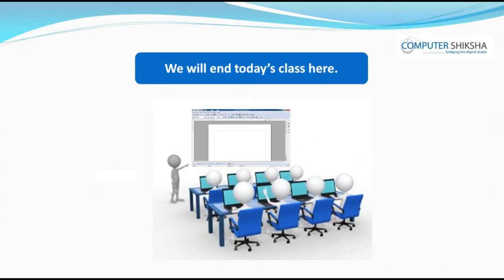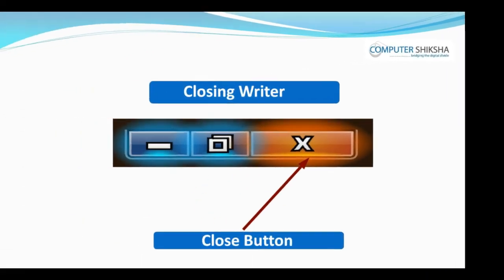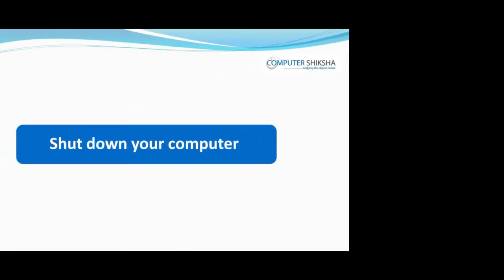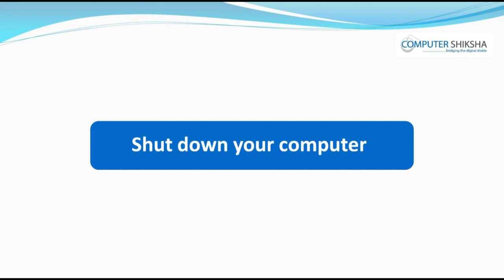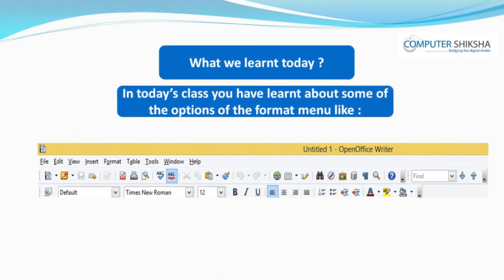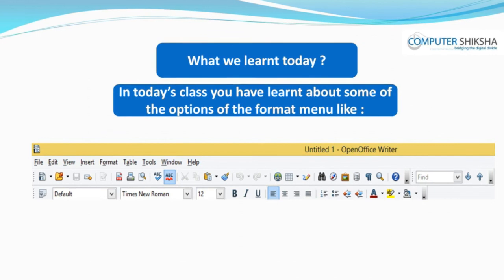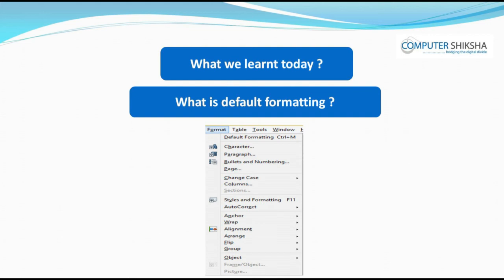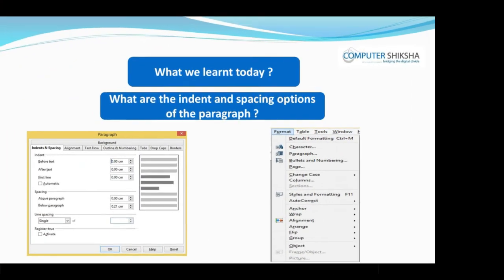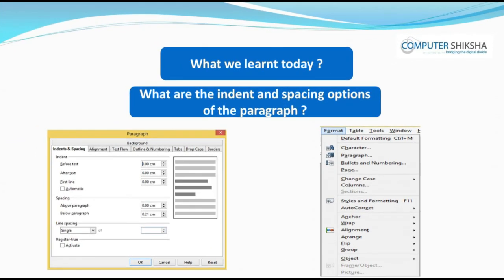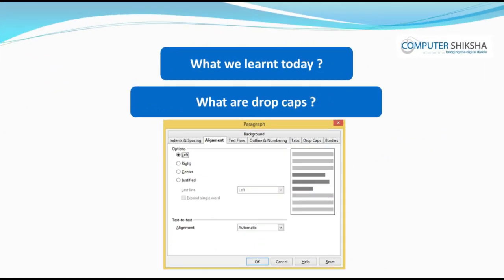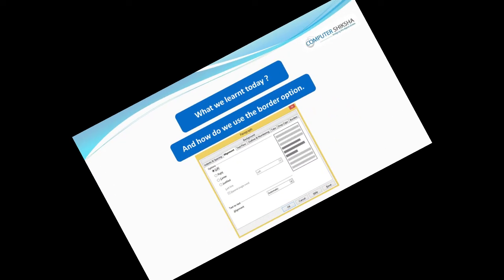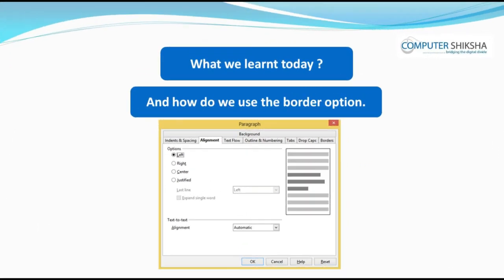We will be ending this class here. All of you close your writer file and properly shut down the system. In today's class, you have learned about some of the options of the format menu: what is default formatting, what are characters, what are the indent and spacing options of the paragraph, what is alignment, what are drop caps, and how do we use the border option. Thank you.